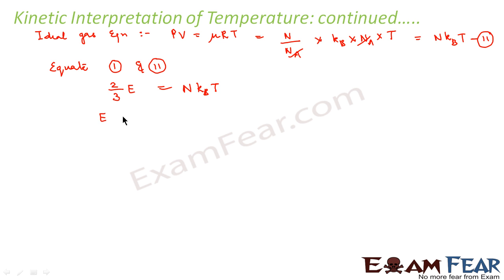Or we can say E equals N kB T. Or we can say E by N, that is the total energy, the average kinetic energy per mole is equal to 3/2 kB T. Now if you look at this equation, what is this?